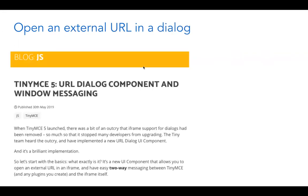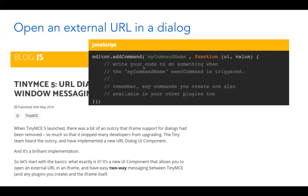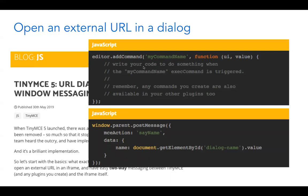Something else now available in TinyMCE 5 is the ability to embed an iframe into a dialog. So if you had a custom media picker — or a custom hyperlink picker would be a good example — very often you're going to write that code separate to TinyMCE, maybe using your own UI library or components, and then want to integrate that into TinyMCE. One of the easiest ways to do that is with an iframe. You can just pass a URL to TinyMCE and it'll open up in a nice lightboxed dialog, where the user can perform the action they need and then insert content or perform other actions back to TinyMCE.